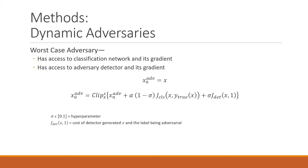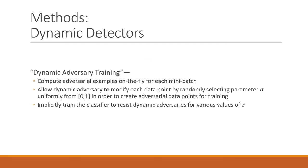This adversary can adapt to the detector. To detect these dynamic adversaries, the authors used dynamic adversary training: they computed adversarial examples on the fly for each batch, allowing the dynamic adversary to modify each data point by randomly selecting a sigma parameter. This created adversarial data points used for training, which implicitly trained the classifier to resist dynamic adversaries across various values of sigma.